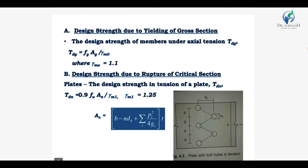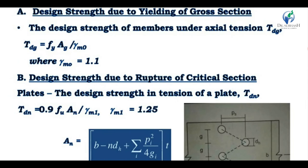Starting with the first — design strength due to yielding of gross section. Generally, a tension member without bolt holes can resist load up to ultimate load without failure, but when longitudinal deformation becomes considerably large, approximately 10 to 15 percent, failure occurs. This failure mode, denoted TDG, is given in clause 6.2, page 30 of IS 800. The formula is TDG = Fy × Ag / γM0, where Fy is the yield stress of material, Ag is the gross cross-sectional area, and the partial safety factor γM0 is per Table 5.